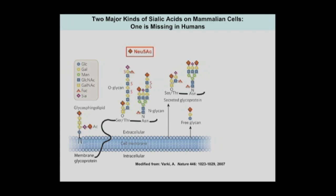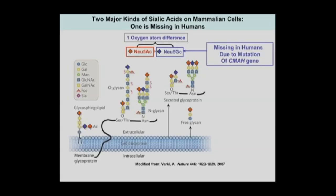This story really began many years ago when we were looking at two major kinds of sialic acids in mammalian cells and found that one was missing in humans. One is called AC, the other is called GC, and they differ by a single oxygen atom. We found what at that time was the first known genetic difference between humans and apes: humans were missing the CMAH gene and therefore could not convert AC to GC. So we were sort of like a knockout mouse with a single gene deleted.